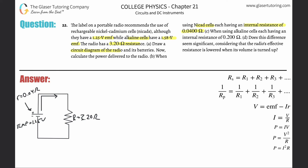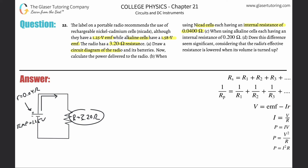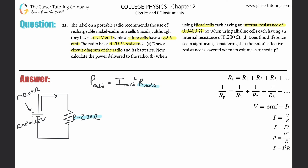Current flows from the positive to the negative terminal around the circuit. In order to figure out the power dissipated by the radio, we need to find either the voltage across the radio or the current flowing through it — we already know the resistance. So the power delivered to the radio equals the current through the radio squared, multiplied by the resistance of the radio. We know the resistance, so now we need the current.